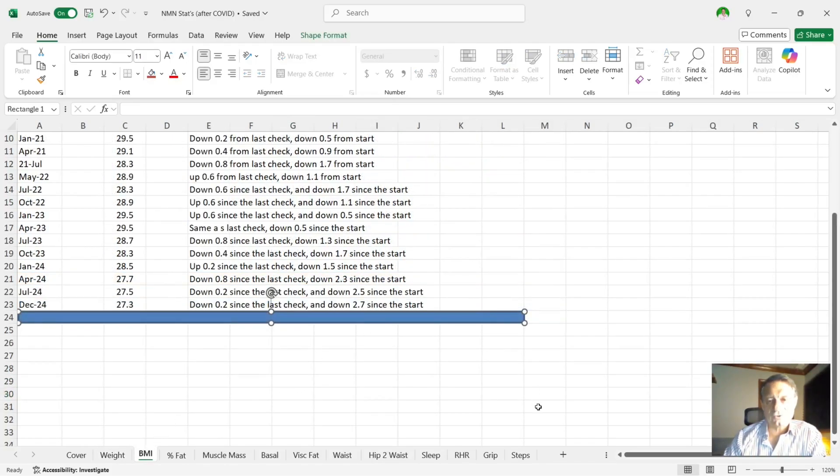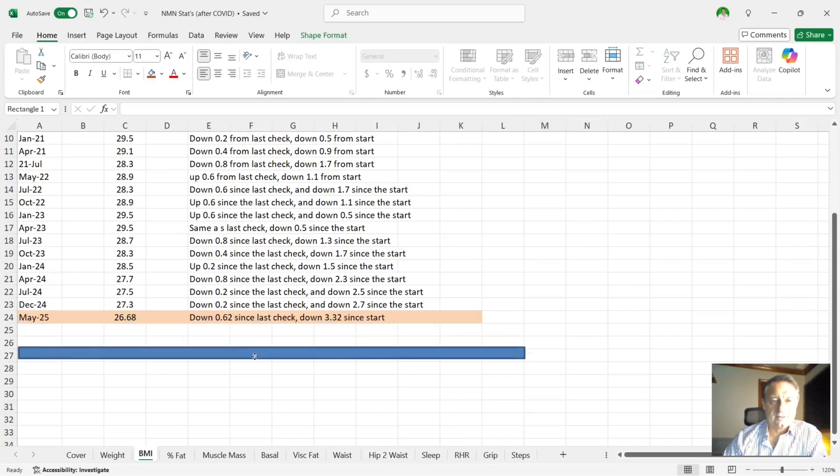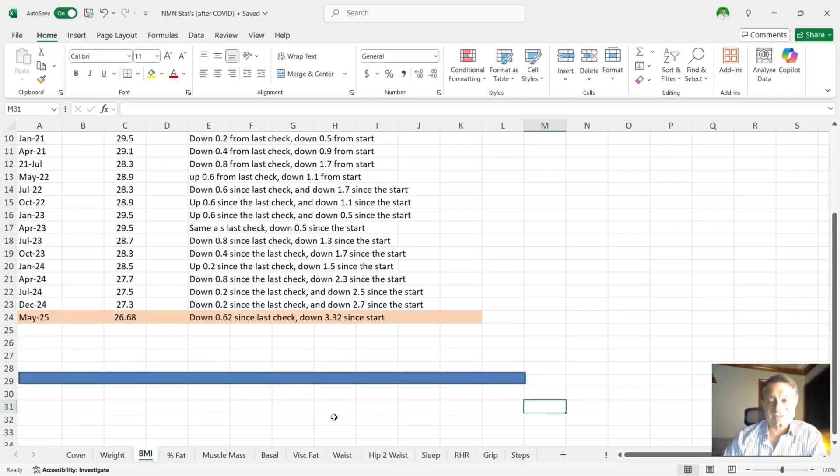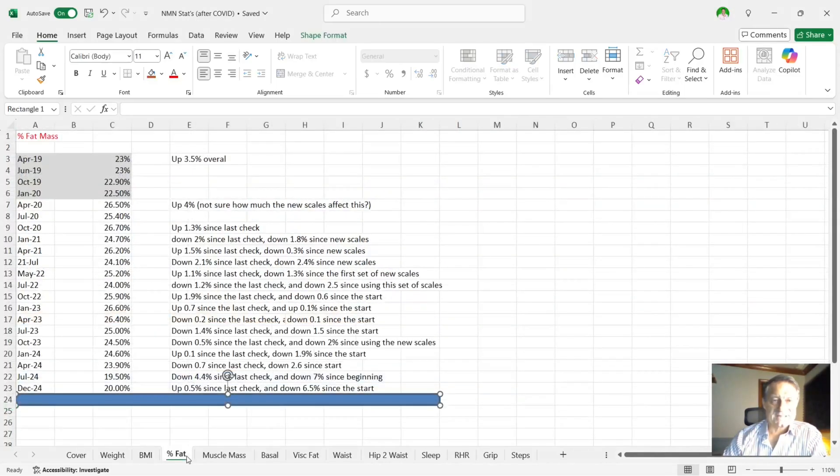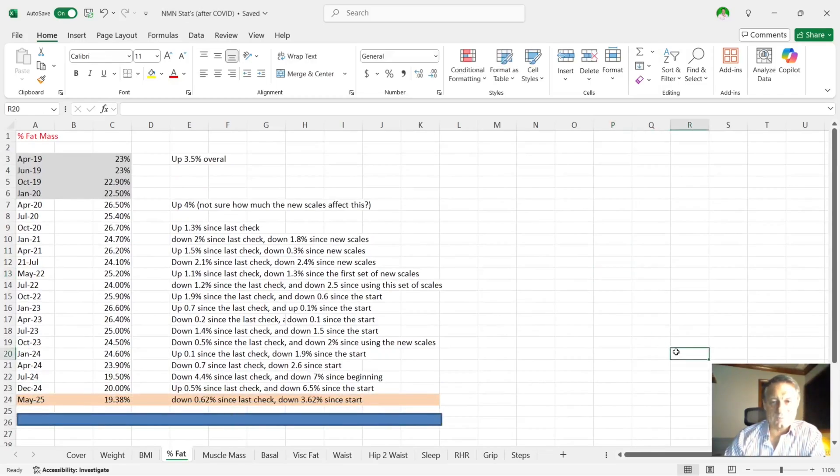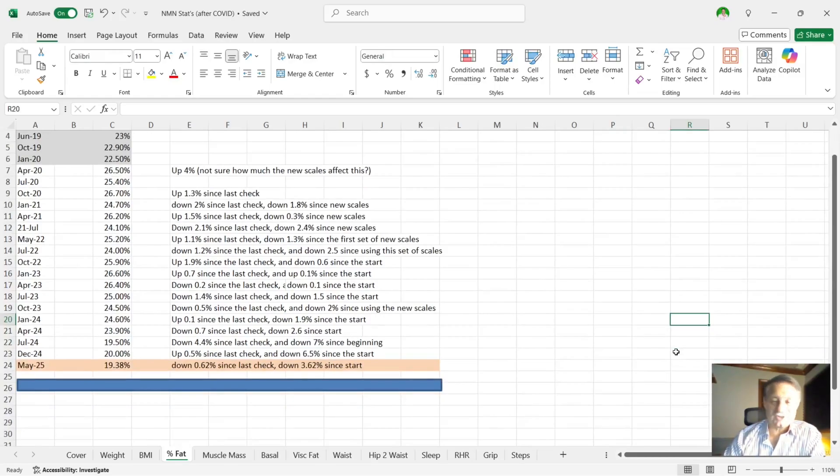My BMI, which you may know I'm not too enthralled with as a formula for health and fitness, was 27.3. It's now down to 26.68, down 0.62 since the last check and down 3.32 since the start. My percentage body fat, you can see in April, 23%. It went from 22 to 26 here because I did change the scales - you can see the change in color from gray to clear. In December, it was 20%. Now it's 19.38. This may be something to do with changing the scales. Overall, that's down 0.62 since the last check and down 3.62% since the start.